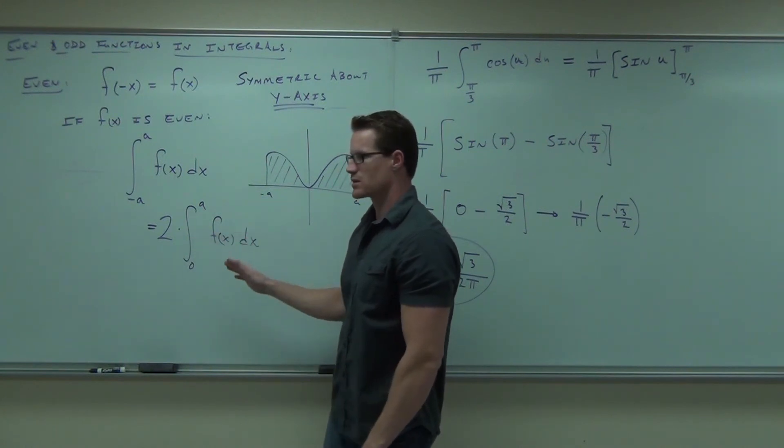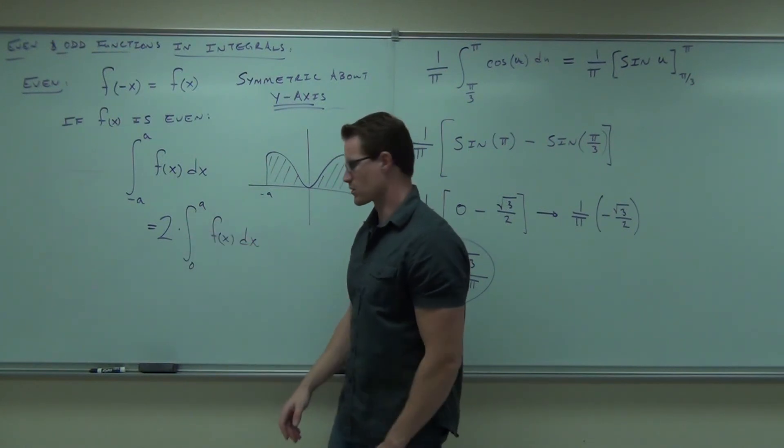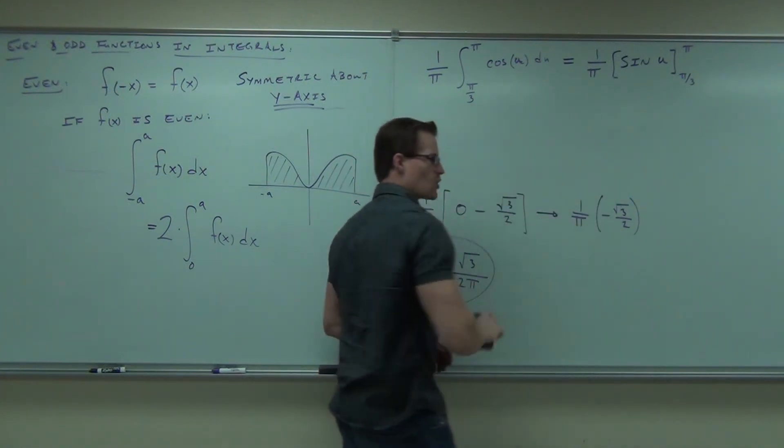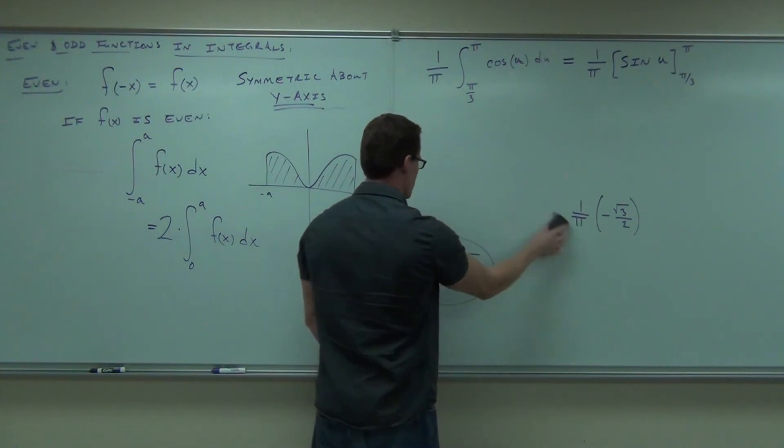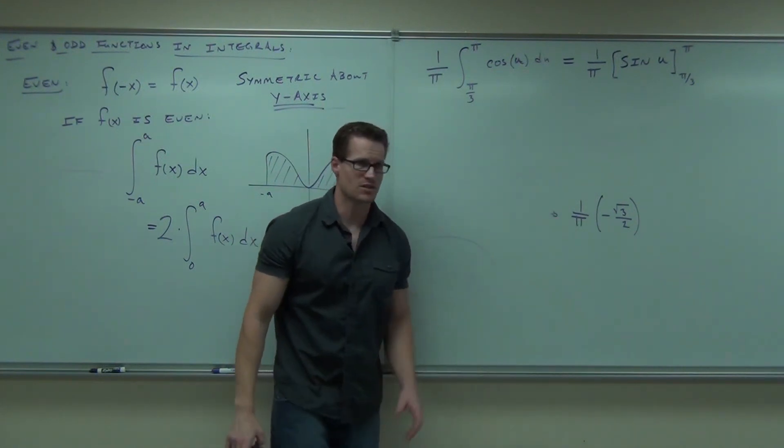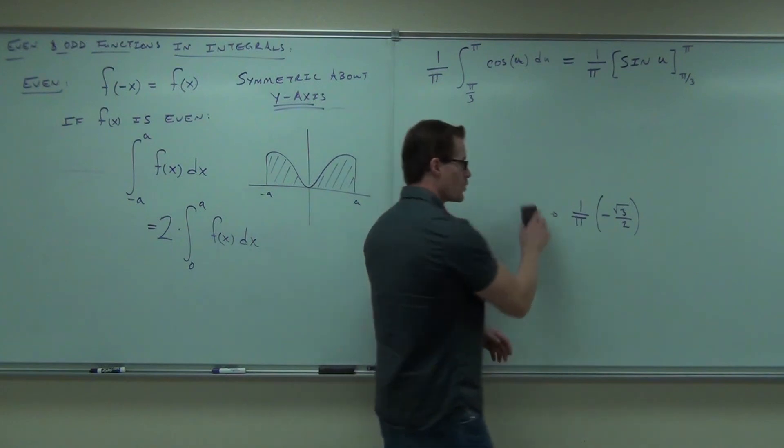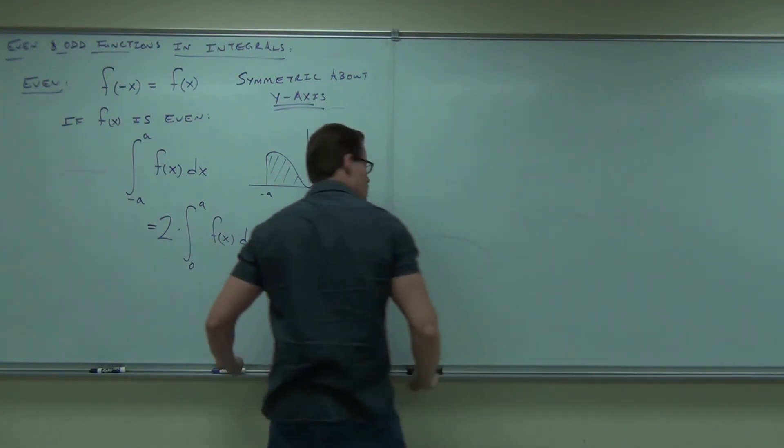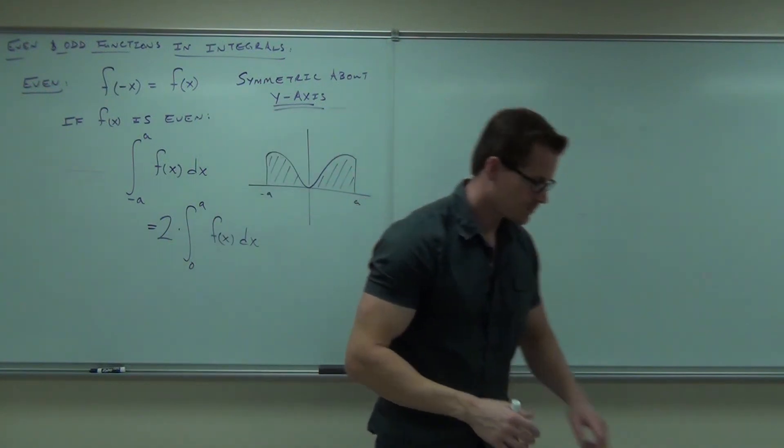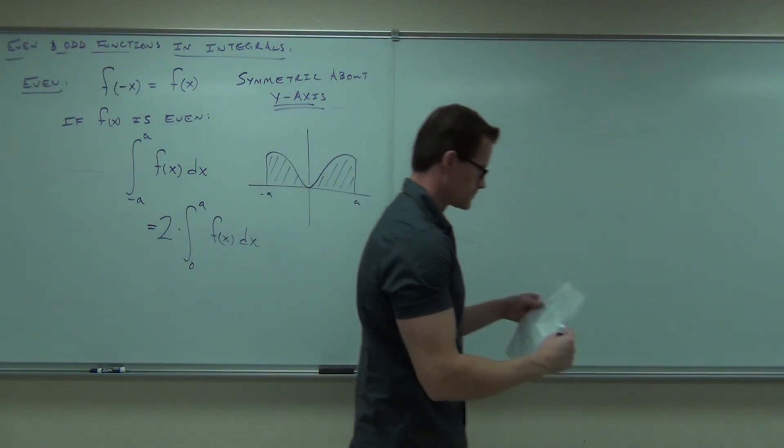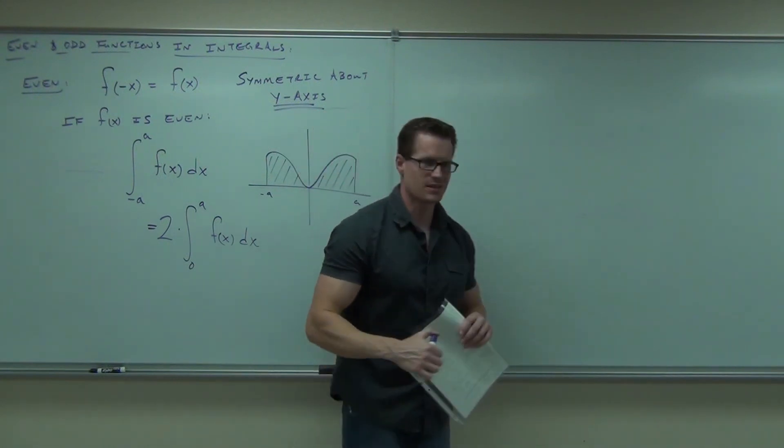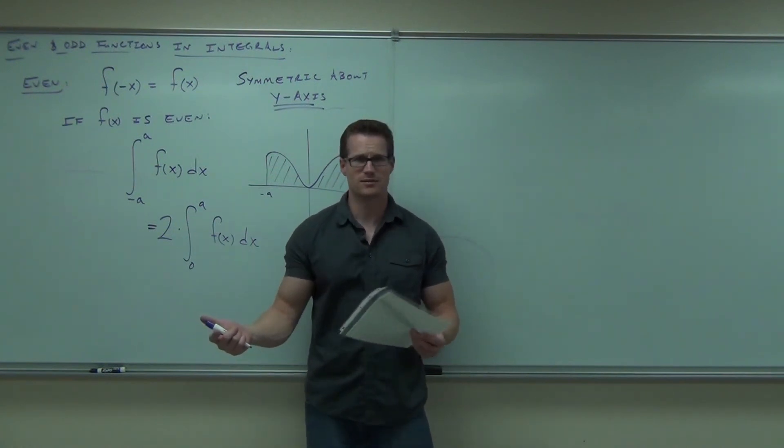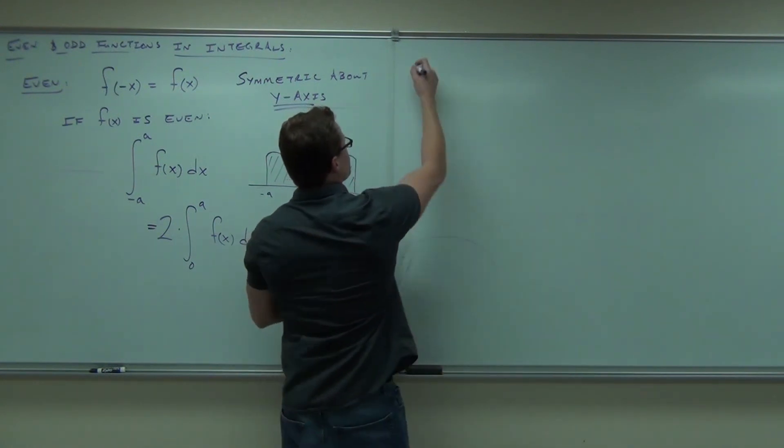Sometimes it's easier to calculate from zero to a number than from negative to a number. If we can do that, well then no problem. If it's an even function, we can do this. We can calculate two times that integral. Zero is normally very much easier. Now if you have to use a substitution, the zero might change. But normally zero is easier. The only thing you've got to do is that you have to prove it's even before you can do it. You've got to show that it's even.